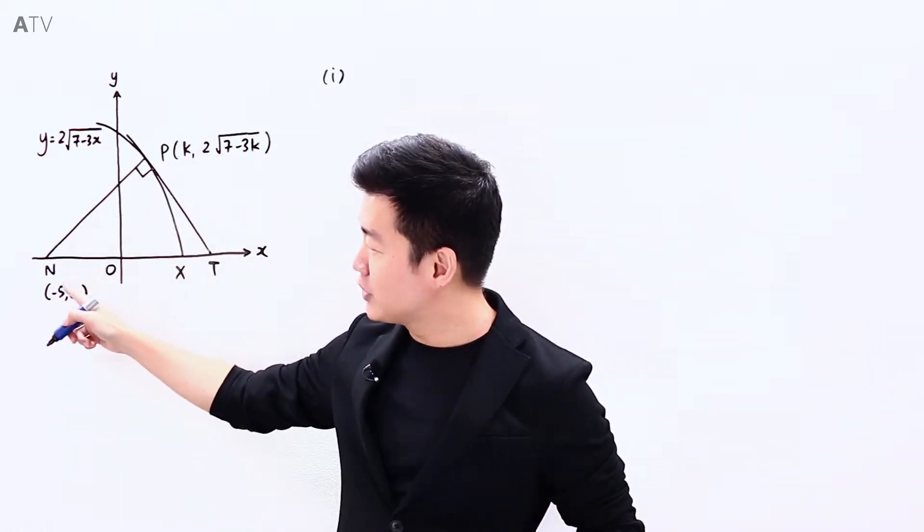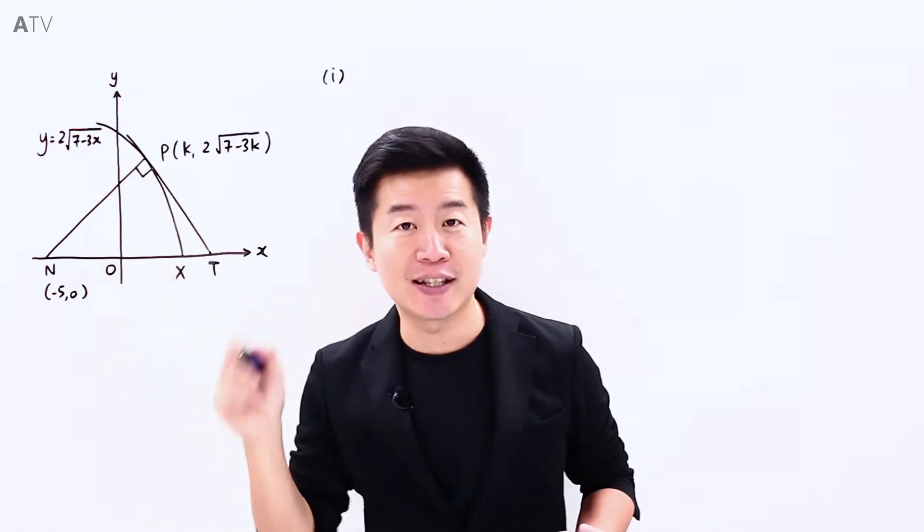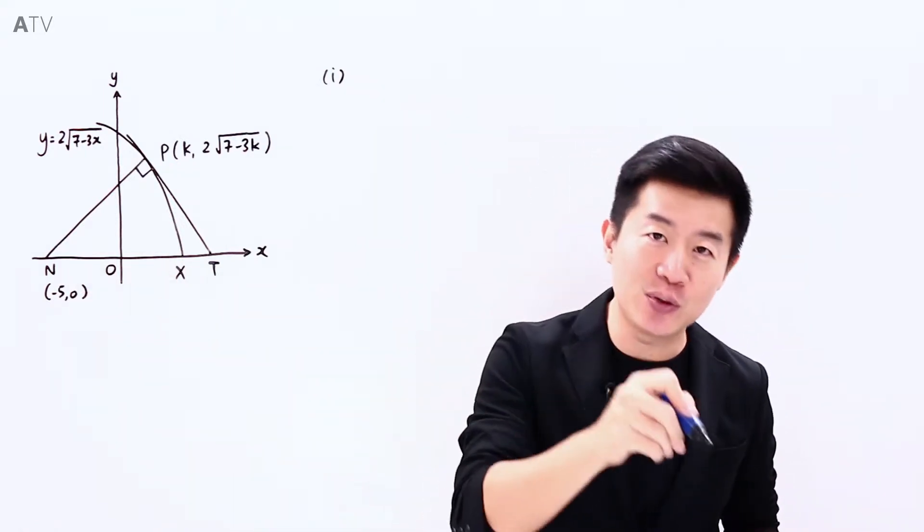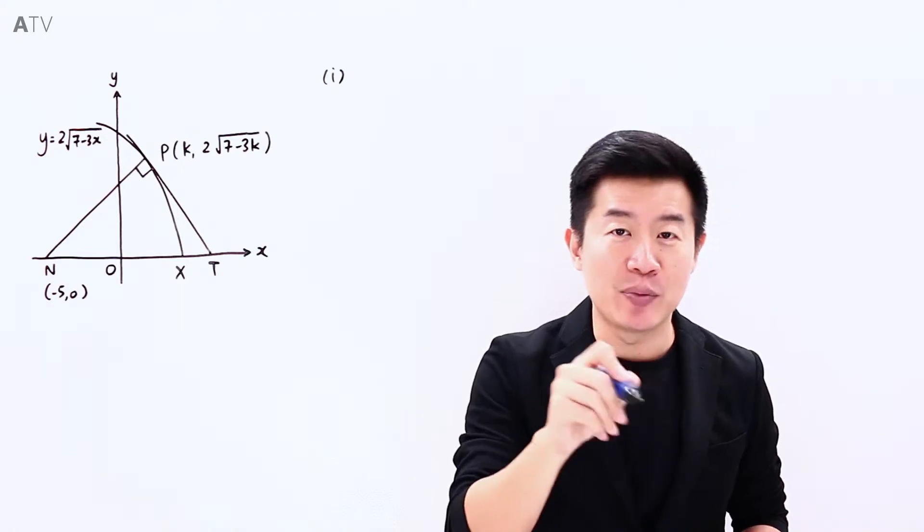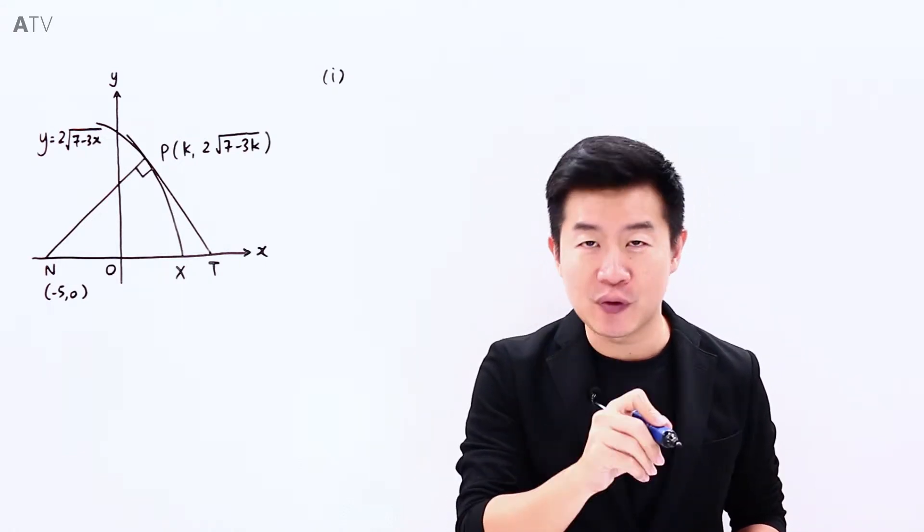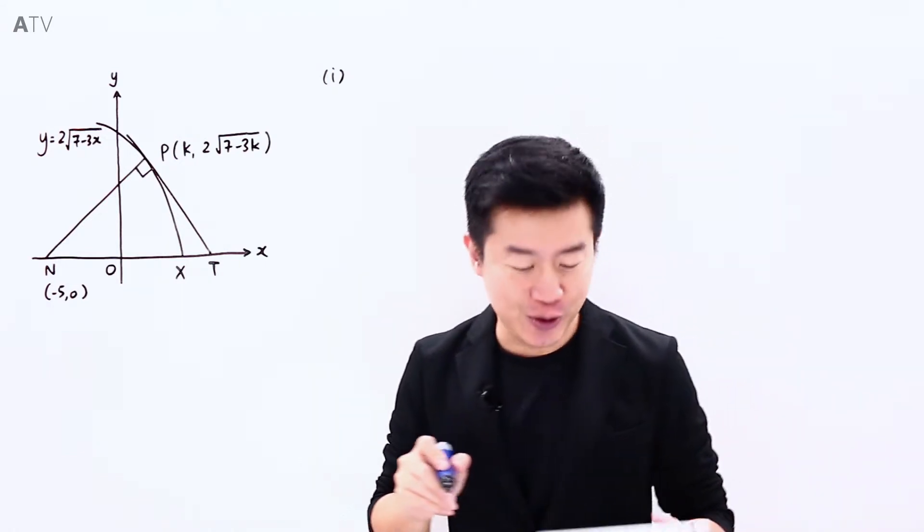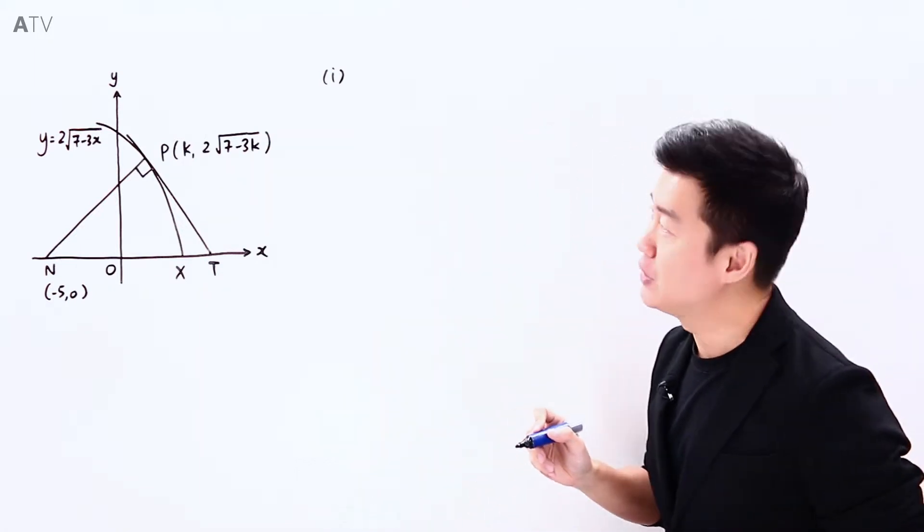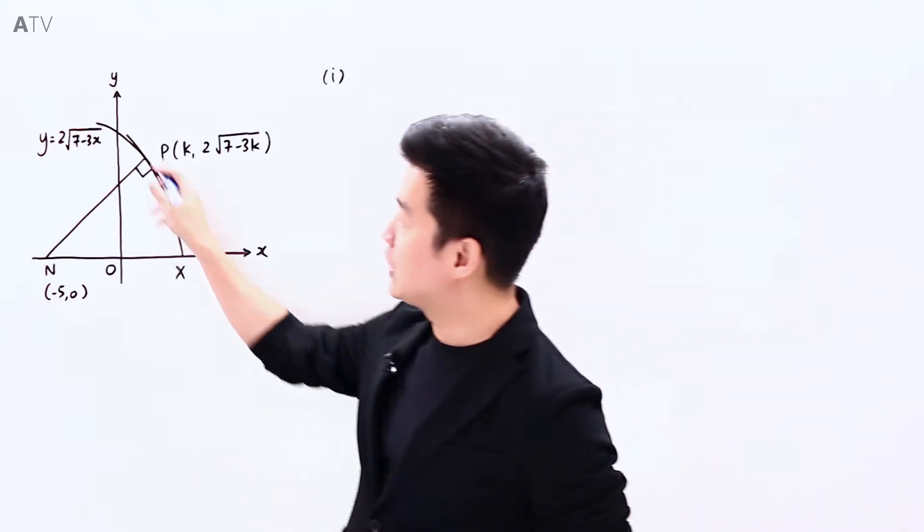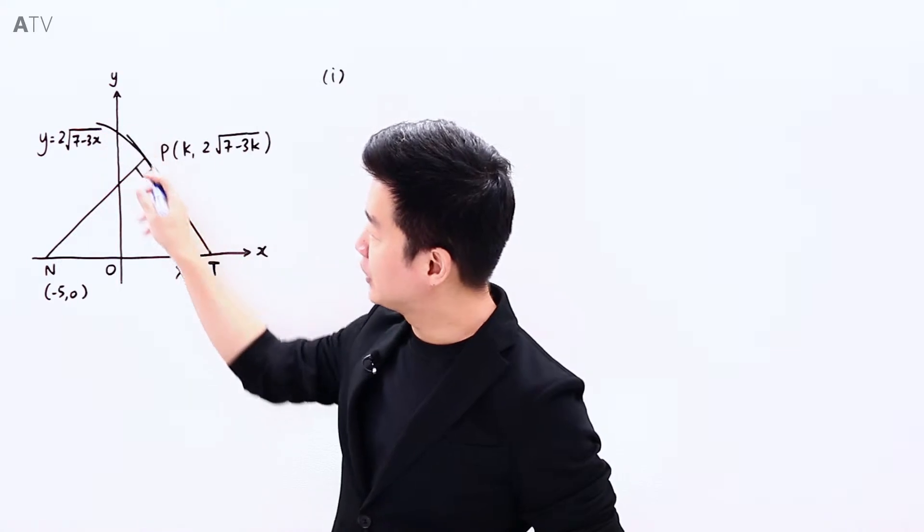this line is going to pass through the point N. So we can substitute the coordinates of N into the equation. And hence, k will be the only unknown. We will be able to solve for k, and hopefully k is going to be 1, which we are supposed to prove. So let's try to find dy/dx for the curve first.